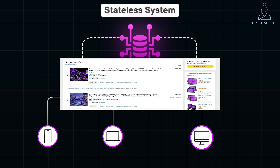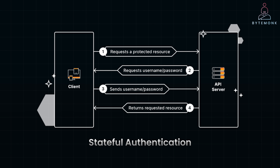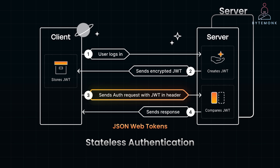This reliability enhances user satisfaction and encourages customers to complete their purchases. Another example is authentication. In a stateful authentication system, once you log in, the server keeps track of your authenticated session. If the server fails or you connect to a different server, you might be logged out unexpectedly because the new server doesn't recognize your session. Whereas in a stateless authentication system, authentication tokens like JWTs or JSON Web Tokens are used. These tokens contain all the necessary information and are sent with each request. Any server can verify the token and grant access without needing to store session data locally.